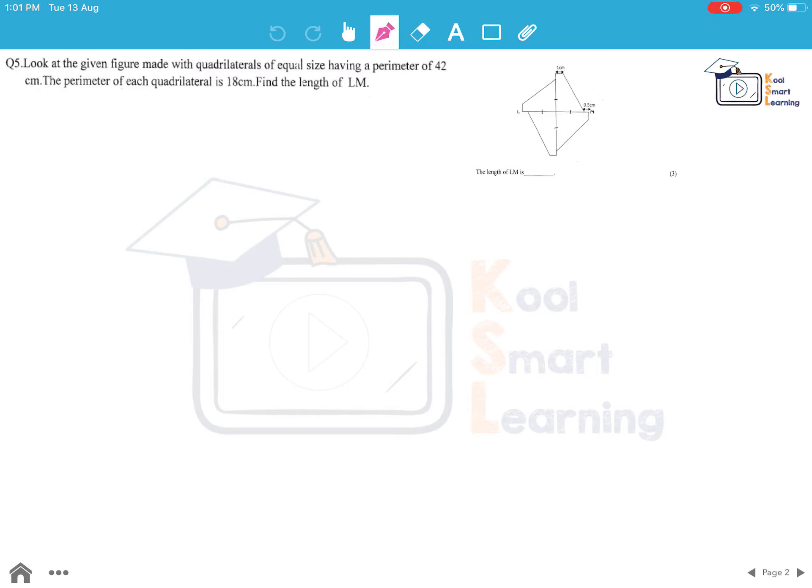Look at the given figure made with quadrilaterals of equal size having a perimeter of 42 cm. The perimeter of each quadrilateral is 18 cm. Find the length of LM.